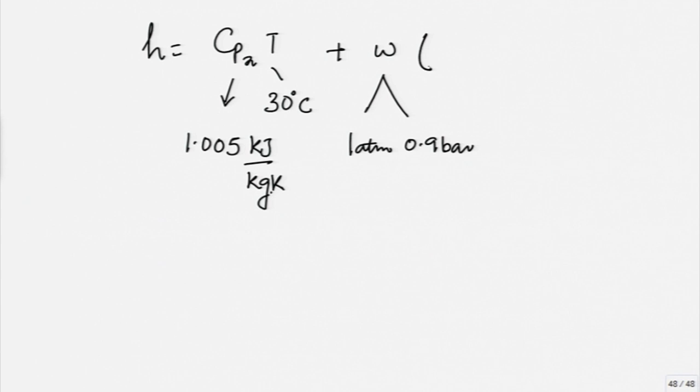The next thing you would require is specific enthalpy. H is again Cp of dry air into T, T is 30 degrees. This will express in kilojoules 1.005 kilojoule per kilogram Kelvin. And then, we will add omega. Now, you realize that you have two values of omega, one at 1 atmosphere and one at 0.9 bar and I will get 2501 plus 1.88 which is the Cp for water vapor into T and this is 30 degree C. The only difference here in the calculations is in the omega which is different for these two different pressures and that will change.